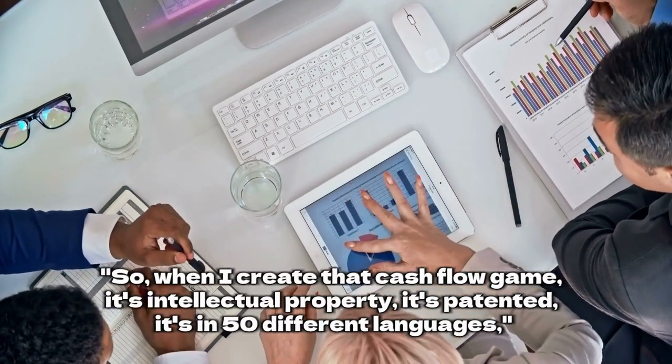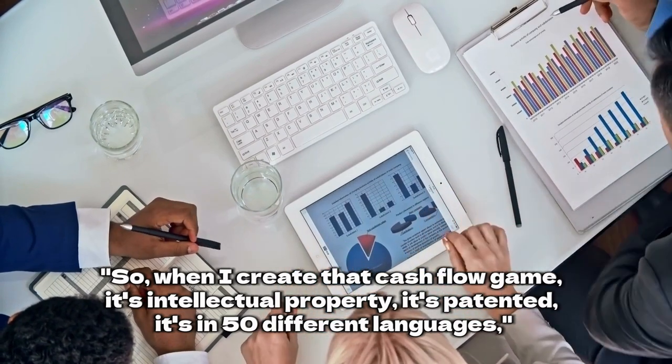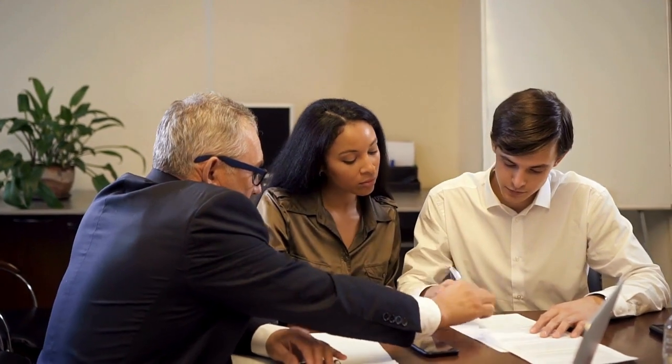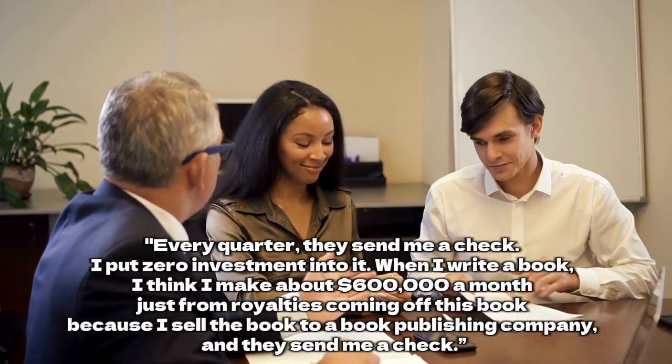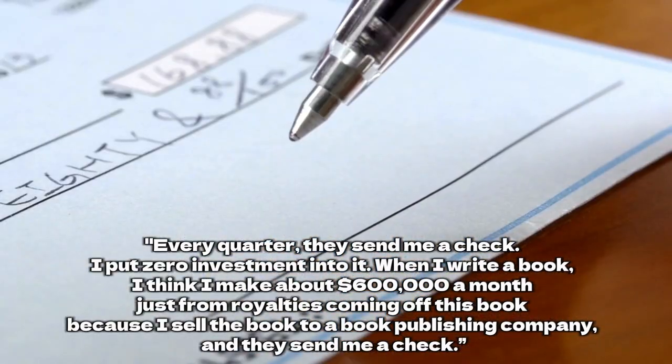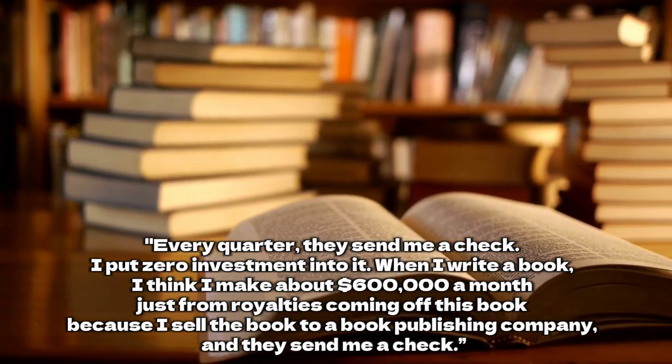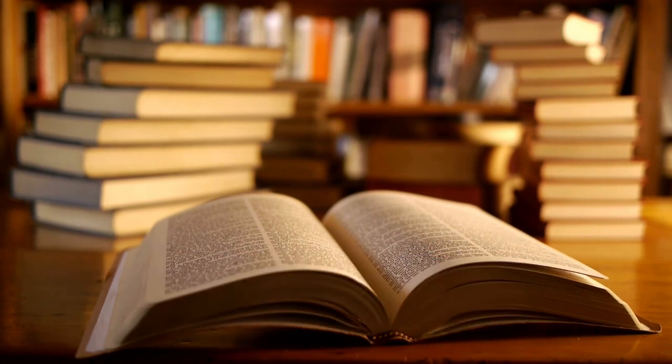So, when I create that cash flow game, it's intellectual property, it's patented, it's in 50 different languages, said Kiyosaki during a speaking engagement. Every quarter they send me a check. I put zero investment into it. When I write a book, I think I make about $600,000 a month, just from royalties coming off this book because I sell the book to a book publishing company and they send me a check.